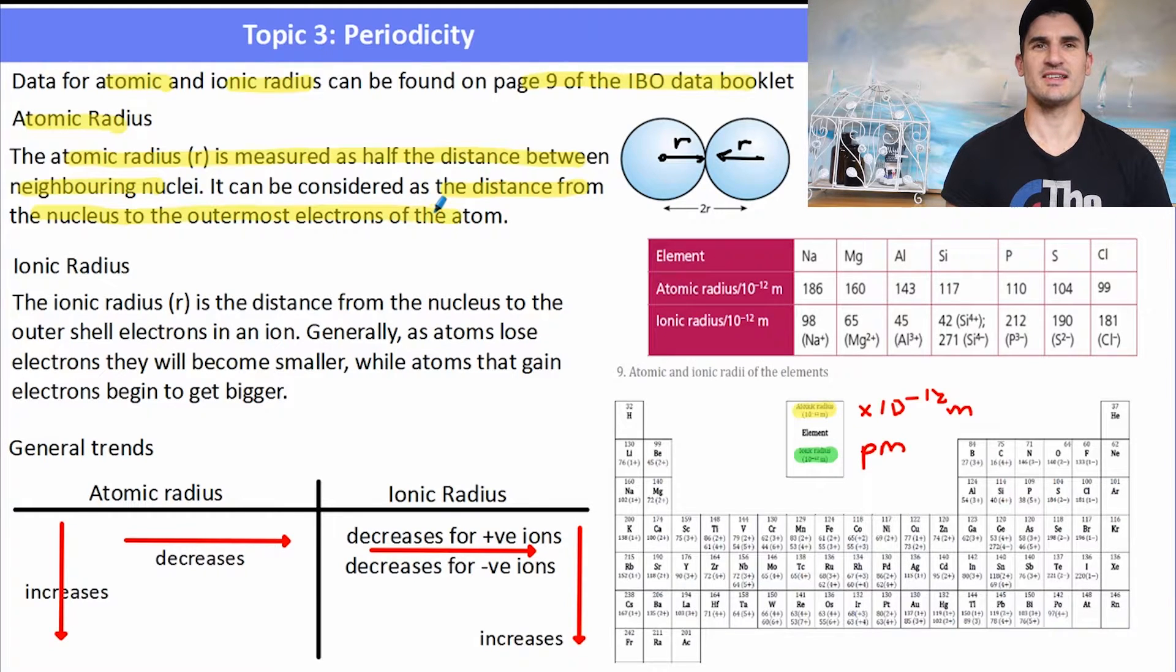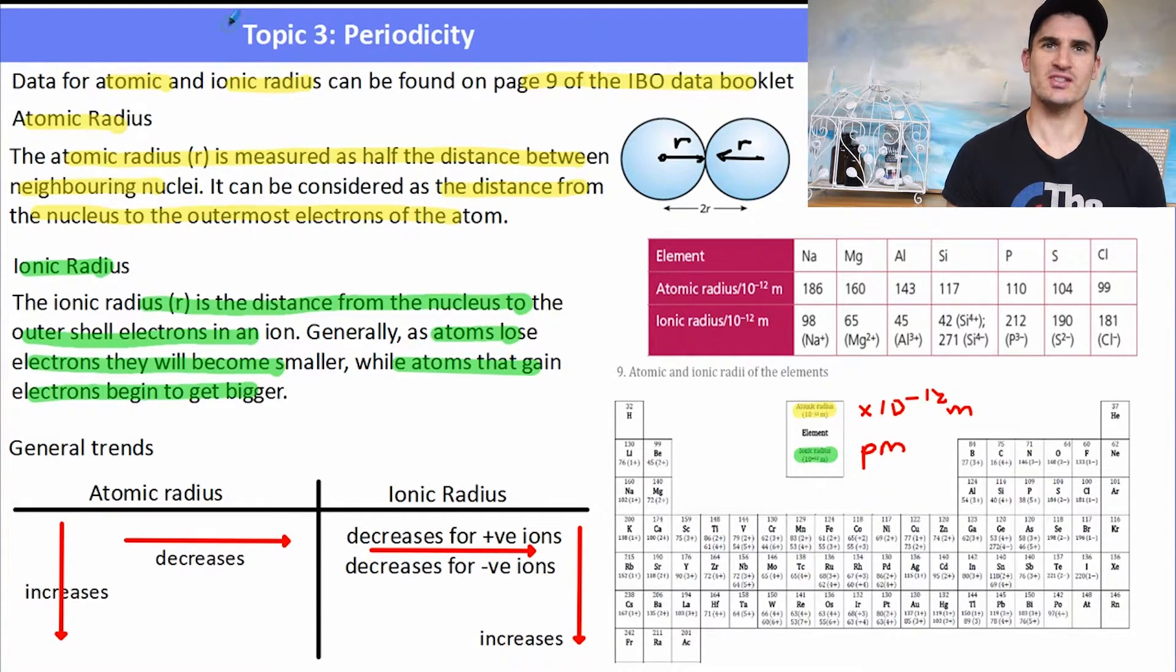The ionic radius is the distance from the nucleus to the outer shell of electrons in an ion. So with ions, some things can form positive ions, some can form negative ions. Generally, as atoms lose electrons, they become smaller in size. And as they gain them, they become larger in size. So the general trend in atomic radius is it increases as we go down a group and decreases as we go across the period. And for the ionic radius, it decreases for the positive ions and decreases for the negative ions. But it also increases as we go down the group. We'll look at how to explain those trends in the next video. This one, we just want to identify.